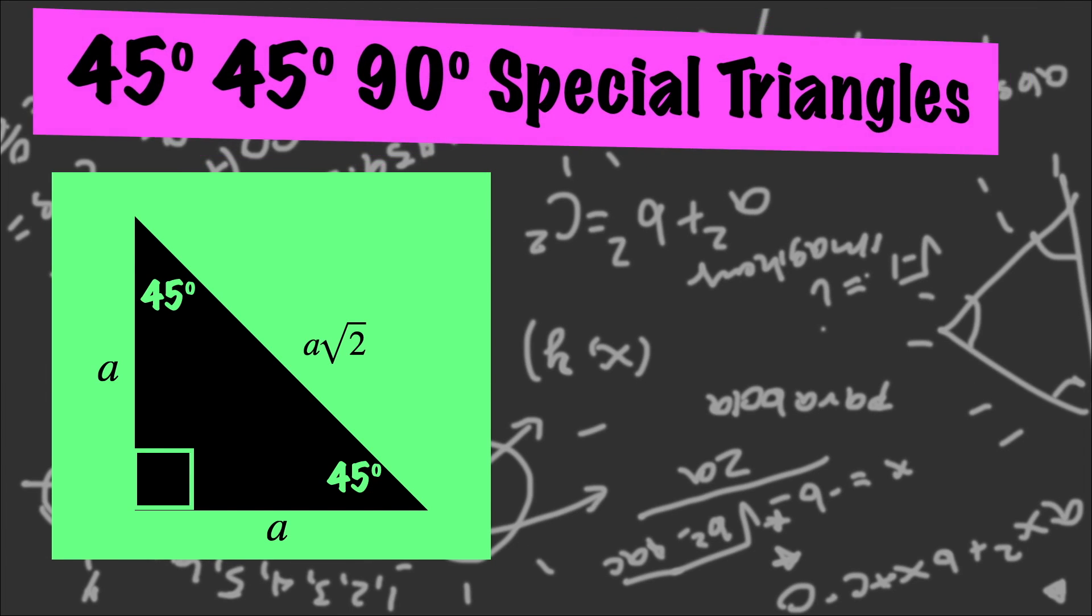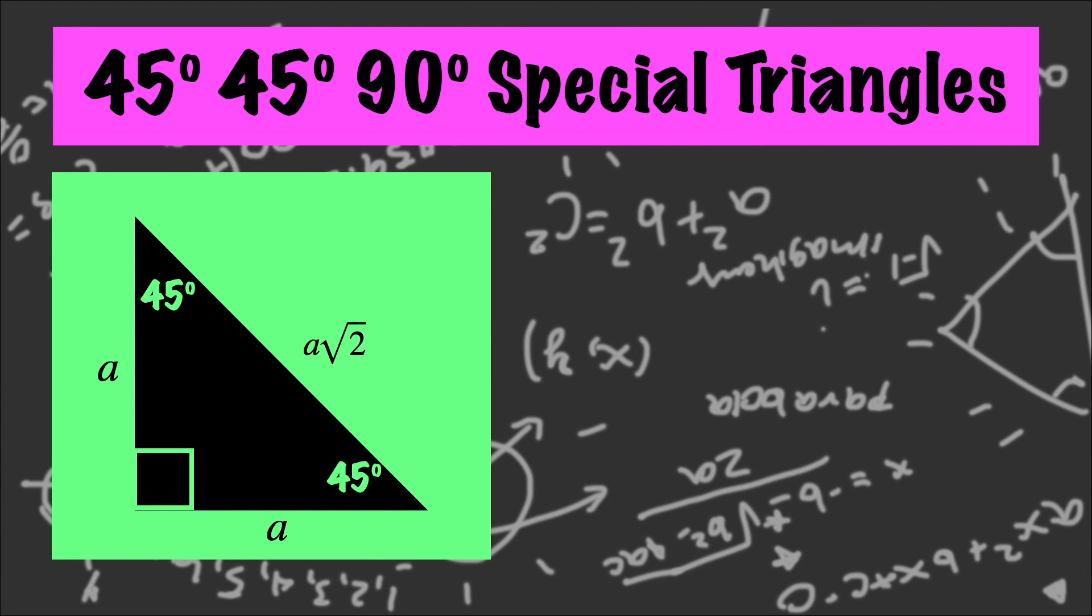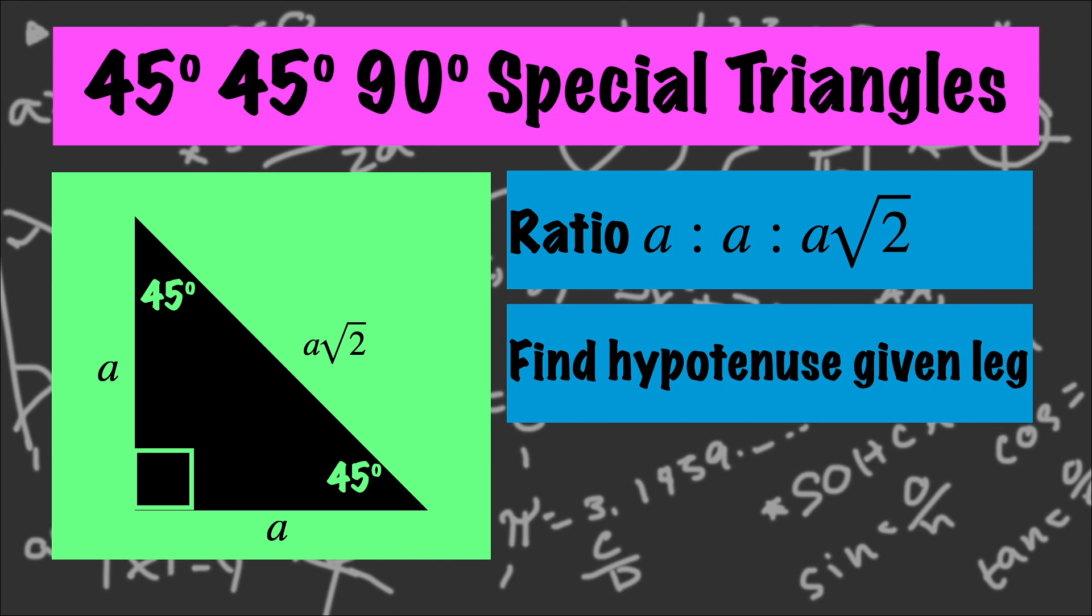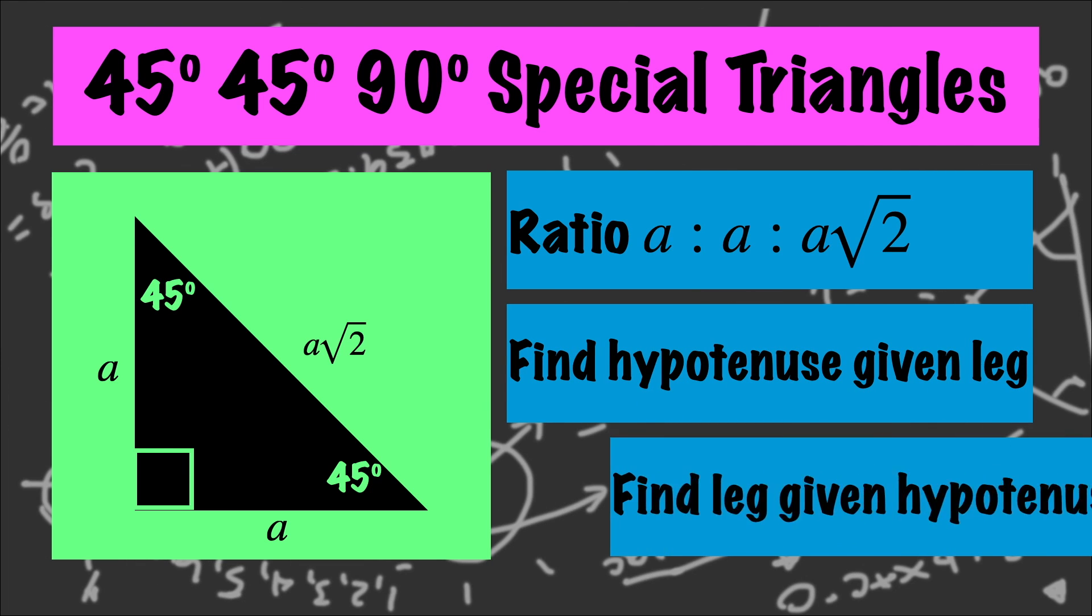In this video we're going to go over 45-45-90 degree special triangles by looking at its ratio, finding the hypotenuse given its leg, and then finding the leg given its hypotenuse.